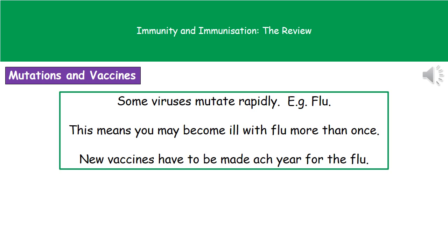Some pathogens are not so easy to deal with through vaccination programs, because some viruses are able to mutate very rapidly. A really good example is the flu. Just because you've had the flu once doesn't mean you won't get it again, because as soon as you've had it, it may mutate into a different type, making you prone to that infection once more. Every year when they offer the flu vaccine, they've generated a new vaccine based on the most likely types of flu that will be around that year. Because flu viruses mutate rapidly, every year we need a new flu vaccine.